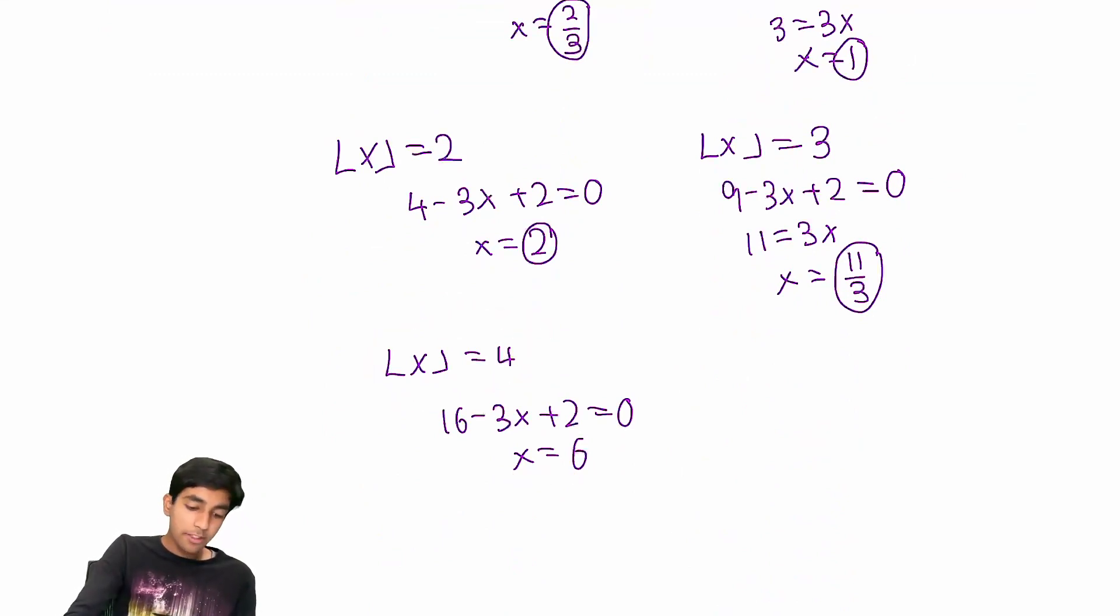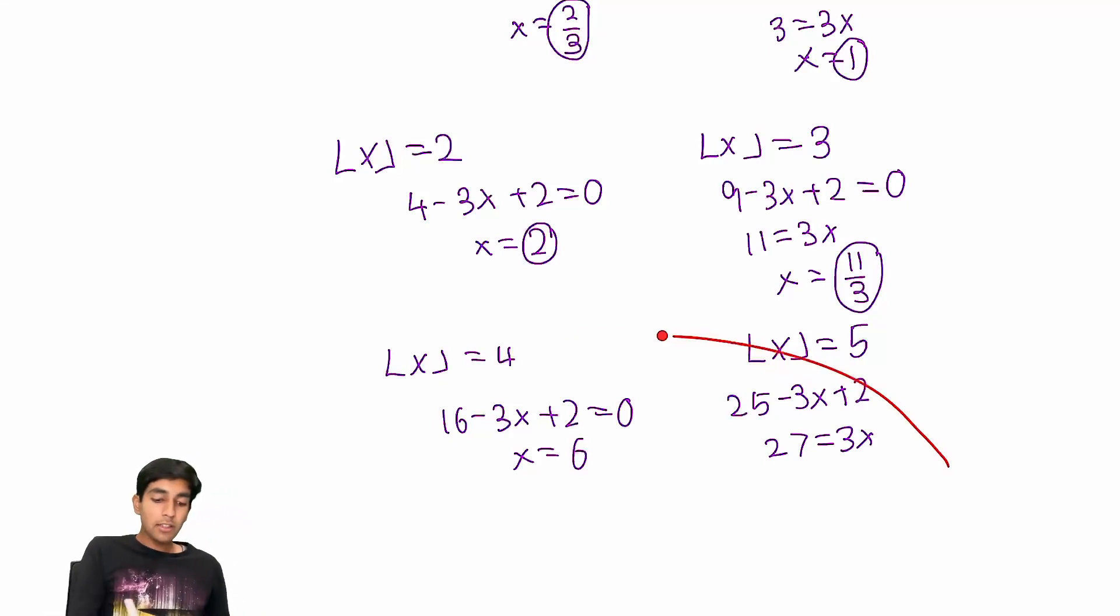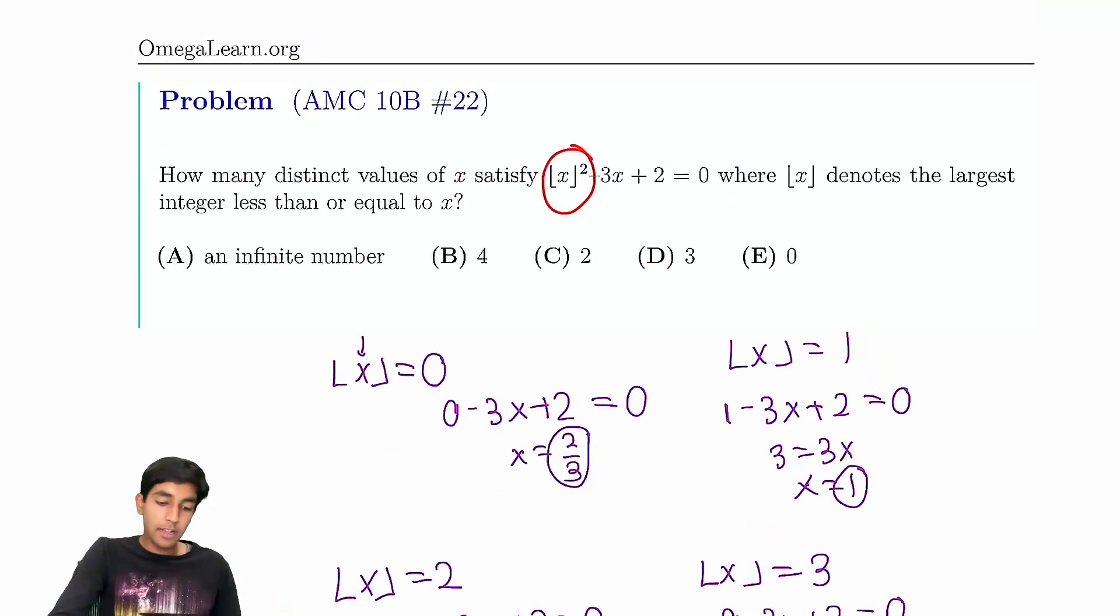And if we go one step further, let's say floor of x equals 5. We would get something similar. We would get 27 equals 3x, and that clearly is not floor of x equals 5. So in fact, nothing else works. The reason is because when floor of x is too big, this term completely overpowers everything else. It completely overpowers this 3x term, so it's just going to be way positive.